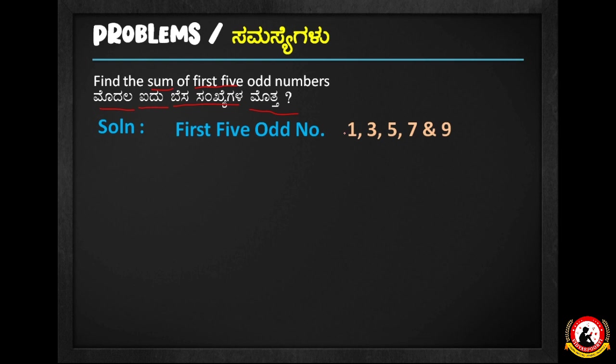So the odd numbers are 1, 3, 5, 7, and 9. Adding them: 1 plus 3 plus 5 plus 7 plus 9, the answer is 25. That is the sum of the first 5 odd numbers.